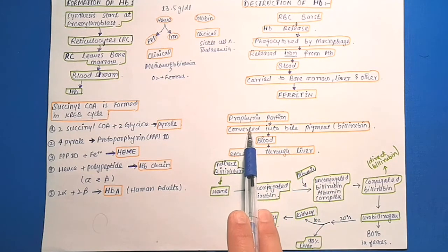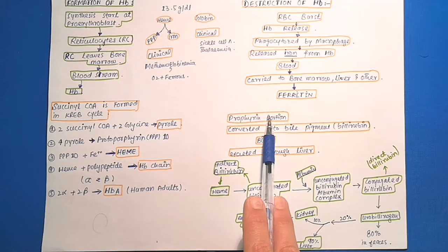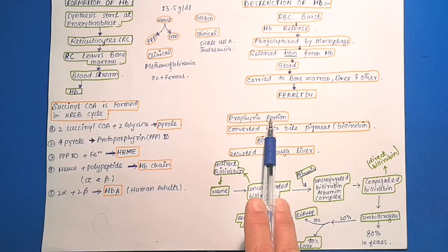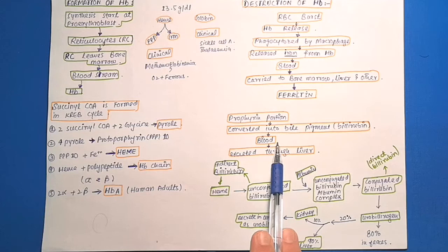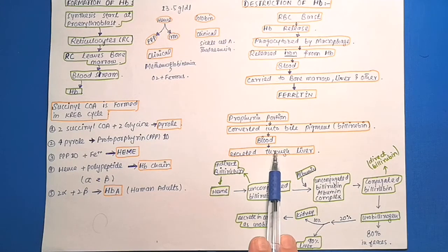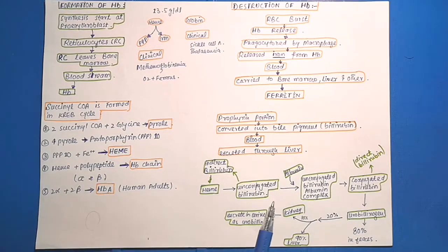The porphyrin portion of hemoglobin is converted by macrophages through a series of stages into bile pigment called bilirubin and released into the blood and later removed from the body by secretion through liver into the bile. Normally, RBC is destroyed in spleen.